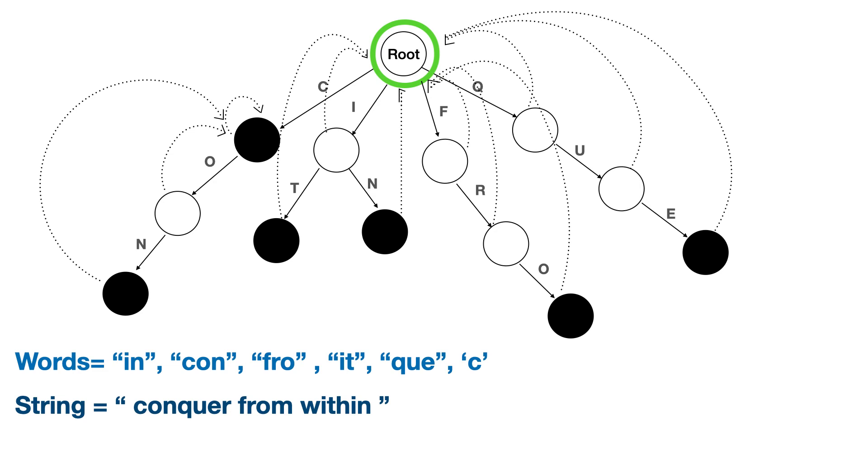Now there is an empty character, so it gets back to the root itself. The next character is F. So it traverses to the F and R followed by O. Since O is an output state again, FRO gets printed and now the next character is M. Since it's a failure case, it goes back to the root again. And coming to the next character, it's a null character, so it remains at the root.